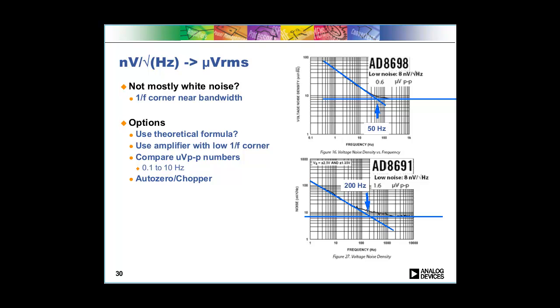They have a higher white noise density and also tend to have, depending on how the designer did it, a bump or spike. Often at the higher frequencies they tend to have something going on that's a little funny.